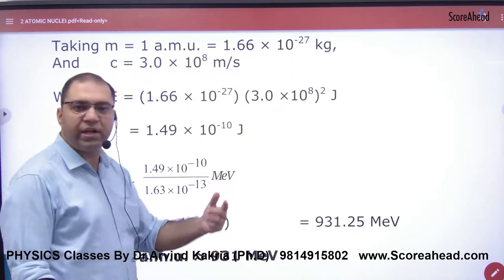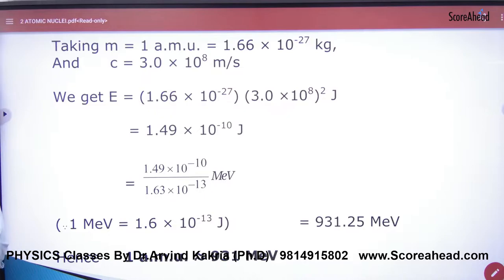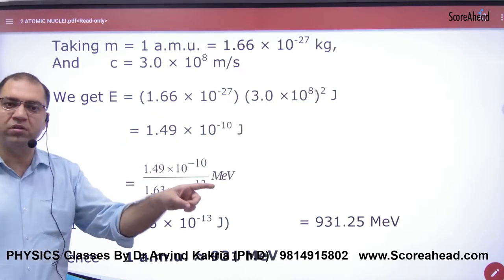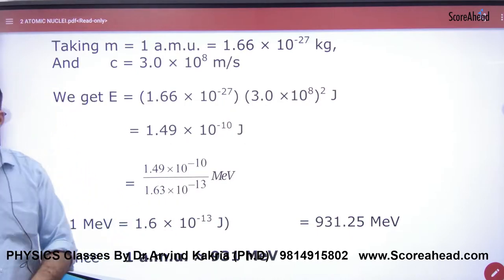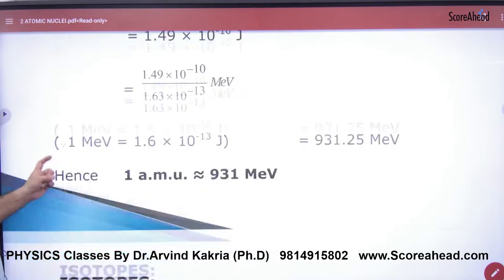So the approximate answer will be 931 MeV. So remember that 1 AMU is approximately equal to 931 MeV. This is a great conversion and a great work conversion.